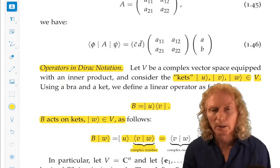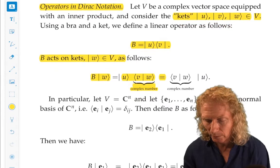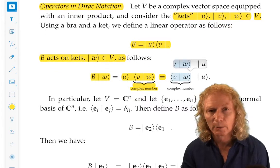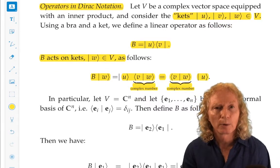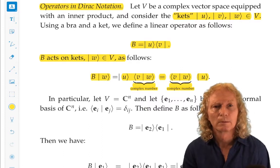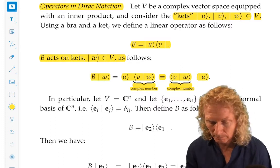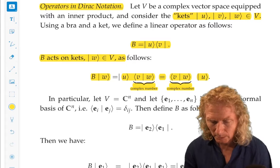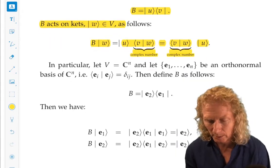Now, bra v with ket w is just a complex number, so we can move it to the other side. And we see exactly how that operator transformed a ket into a different ket. Now we can look at this in much more generality.